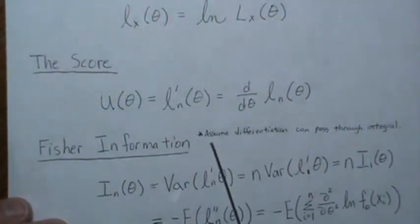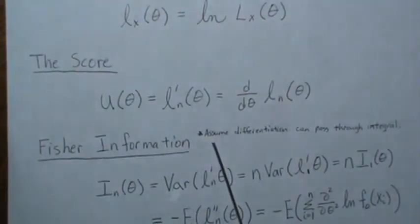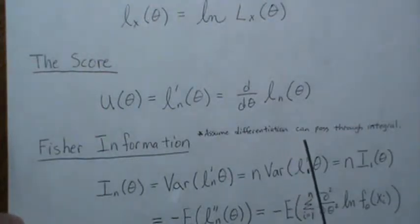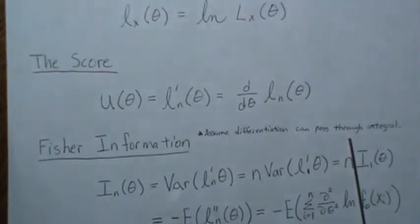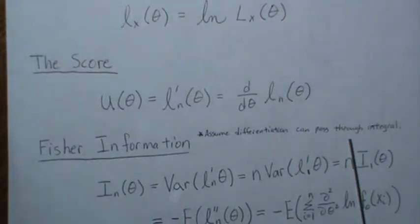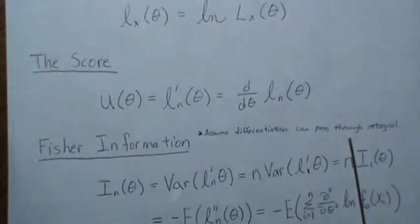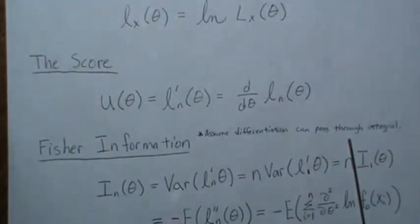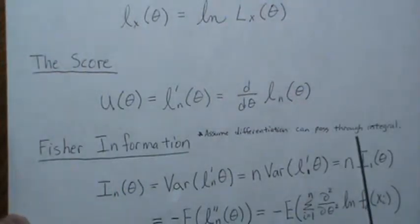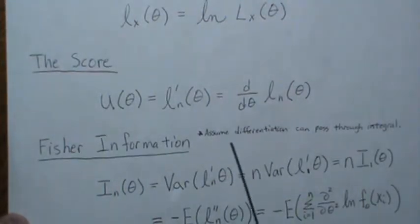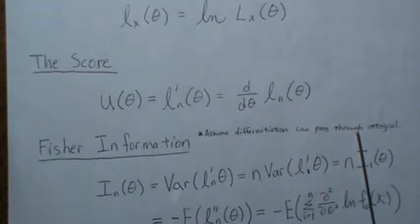An important assumption when looking at the Fisher information is that differentiation can pass through the integral sign. There are different ways to show this — by the dominated convergence theorem, or if your function is monotonic. For most standard statistical distributions this assumption holds.